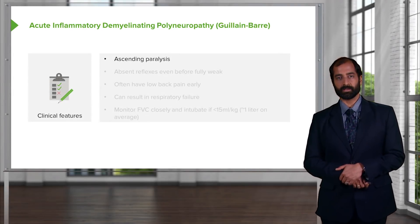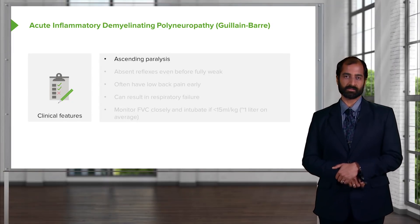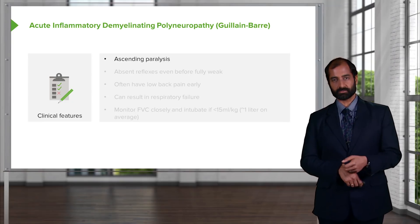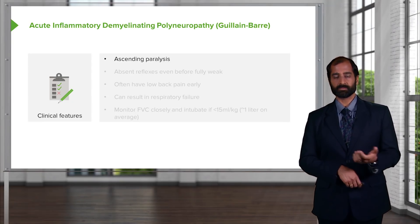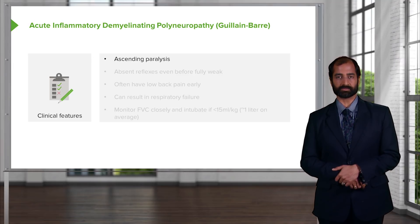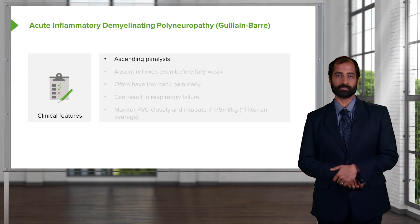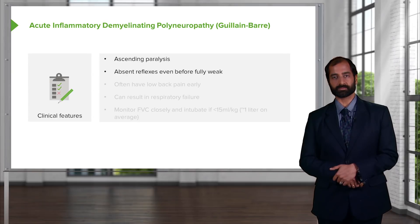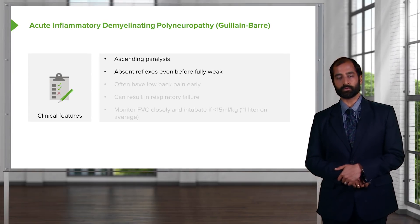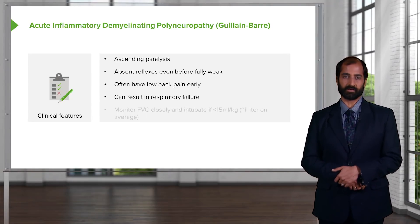Guillain-Barré, aka acute inflammatory demyelinating polyneuropathy. You must understand that many infections predispose this patient, such as gastroenteritis or influenza virus. Thereafter, the pattern of demyelination is an ascending paralysis. This is not as benign as one would think, because if it ascends enough, it will eventually hit your breathing apparatus — the diaphragm. If that's knocked out, your patient is in serious compromise. There is absent reflex even before full weakness, and patients often have low back pain early.